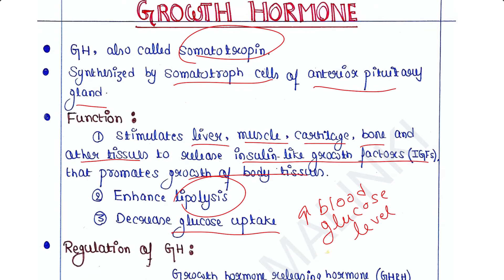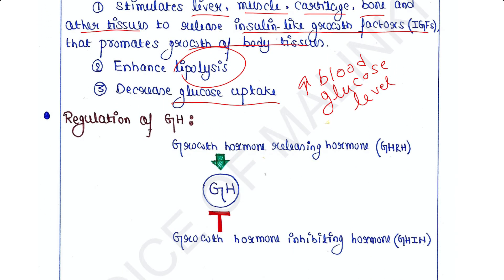Regulation of growth hormone: secretion of growth hormone is regulated by two hypothalamic hormones. One is growth hormone releasing hormone, or GHRH, which promotes secretion of growth hormone. The other is growth hormone inhibiting hormone, or GHIH, which suppresses its secretion.